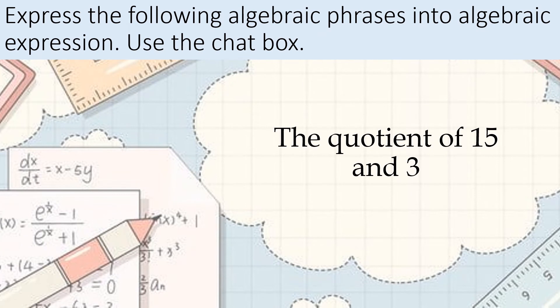The quotient of 15 and 3. Quotient, what is quotient? It's division. So 15 quotient of 3, 15 divided by 3, or you can also write it as 15 over 3.